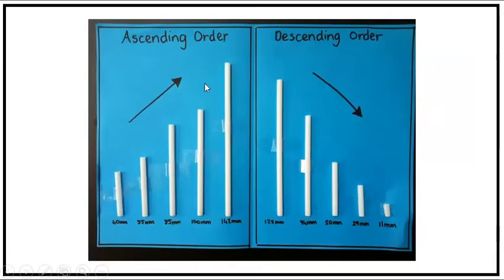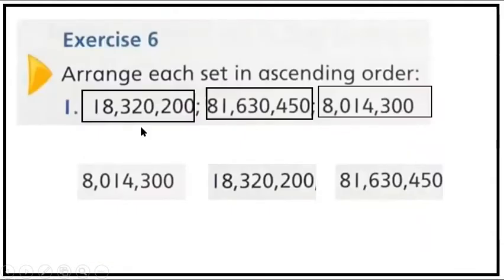Ascending order means we have to write small values first, and then we will keep increasing the values. The first question has 3 numbers.